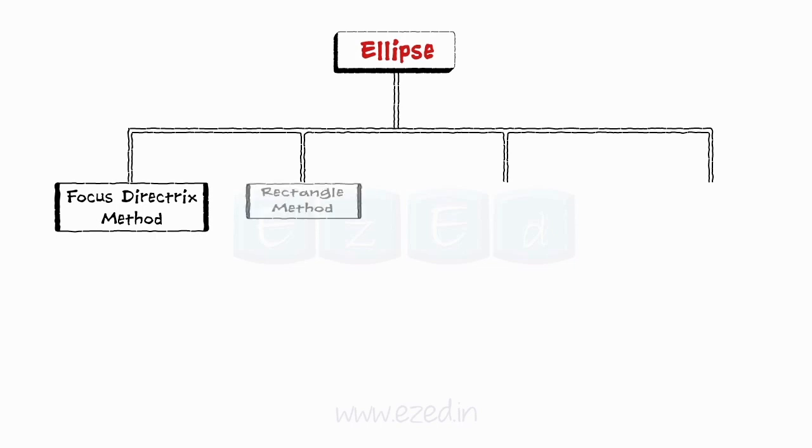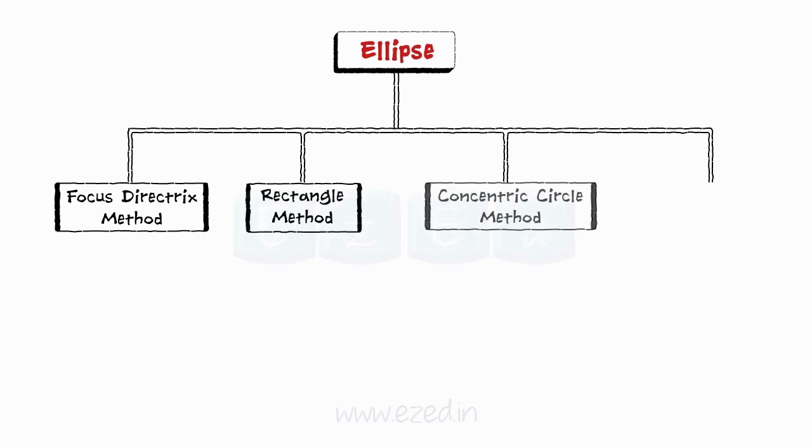Construction of ellipse is done by many different methods like focus directrix method, rectangle method, co-centric circle method, and arcs of a circle method.